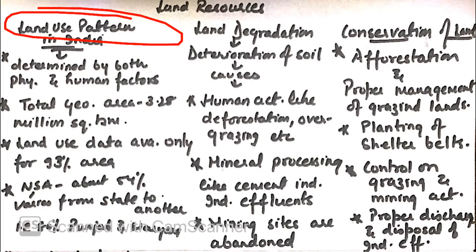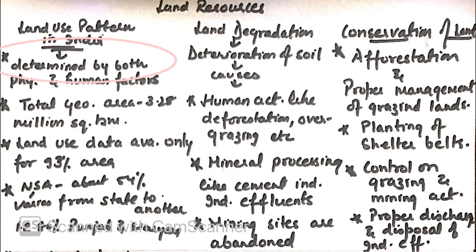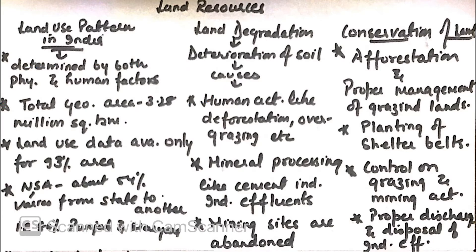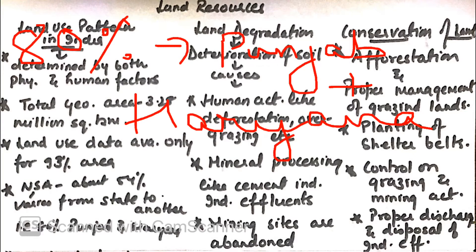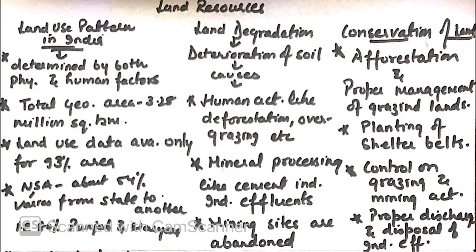Land use pattern in India is determined by both physical and human factors. India's total geographical area is 3.28 million square kilometers. Out of this, we have only 93% area land use data available. Net sown area in India is about 54%, which varies from state to state. For example, 80% net sown area in Punjab and Haryana, whereas less than 10% in most of the northeastern states. Forest percentage is above 24%, whereas the national forest policy was introduced in 1952.